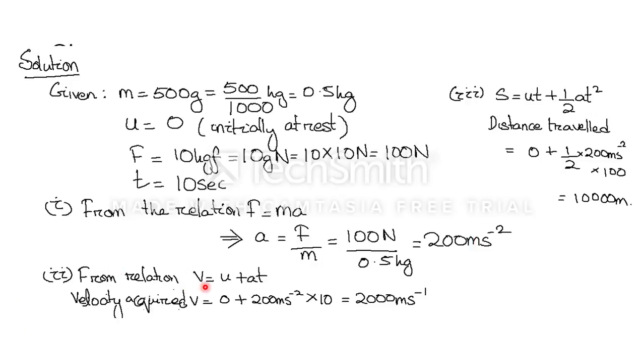The second question tells us to find the final velocity. Velocity acquired is the final velocity. And since u is 0, calculating it, we can see that the answer comes as final velocity 2000 m per second.